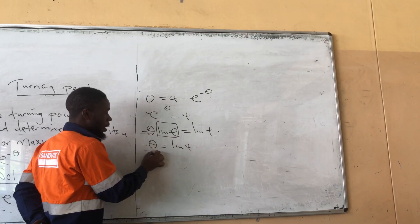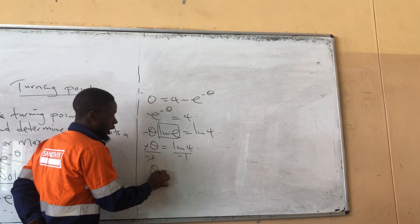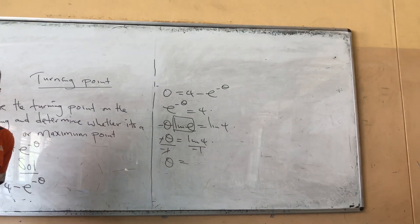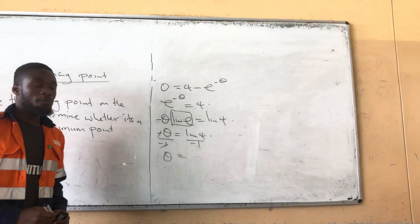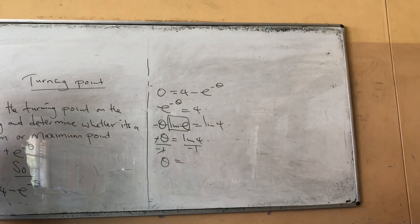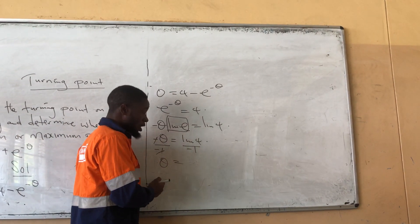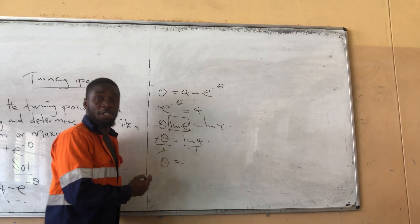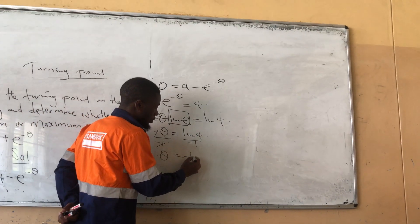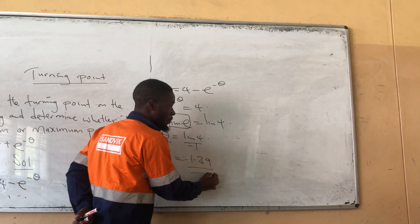Dividing both sides by negative 1, θ equals negative ln(4). The answer is approximately negative 1.39. So θ equals negative 1.39.